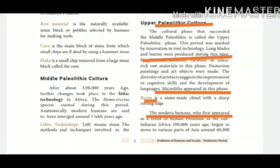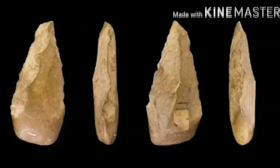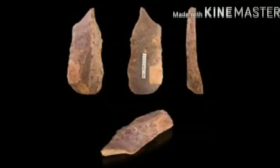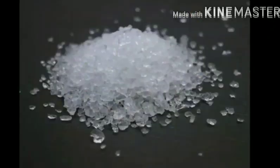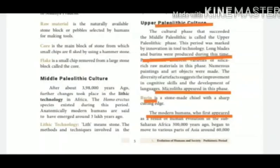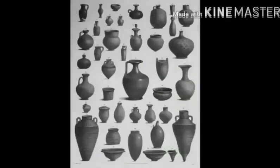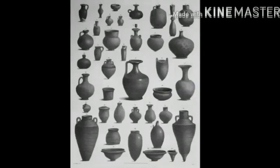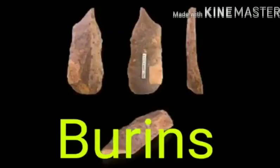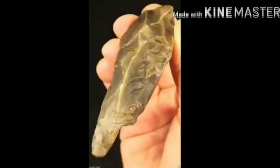Microliths appeared in this phase. A burin is a stone-made chisel with a sharp cutting edge. It is called kooriya vettumuni ullla kallalana uli in Tamil.